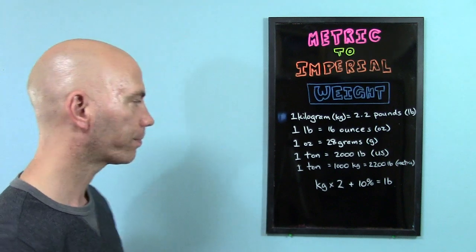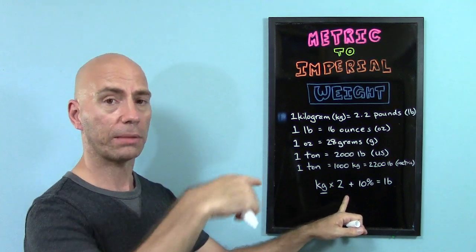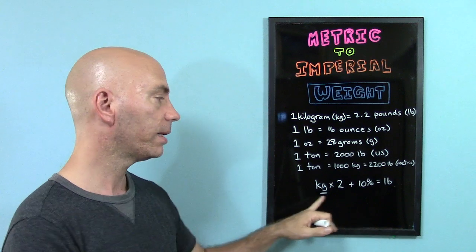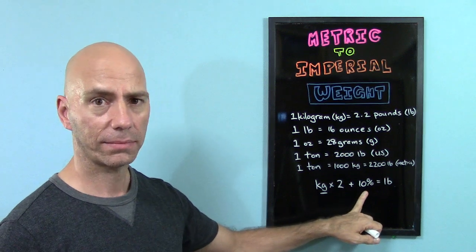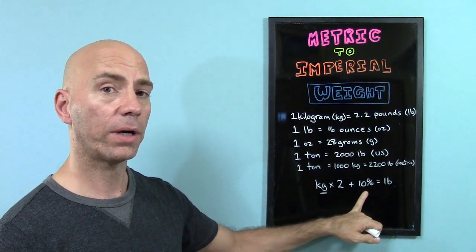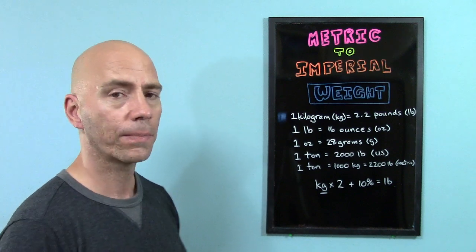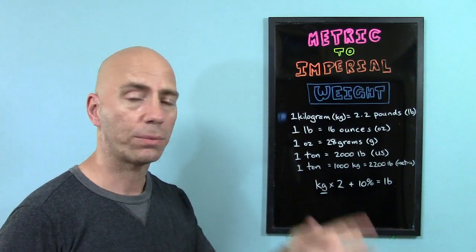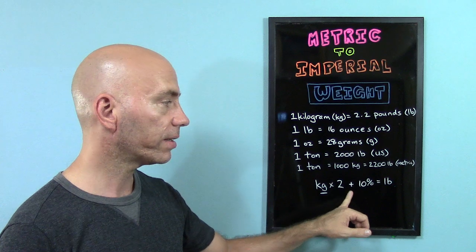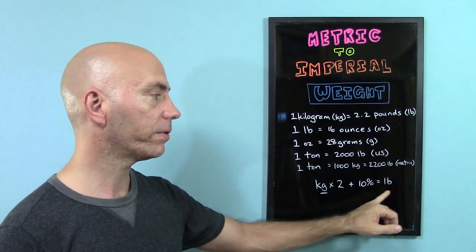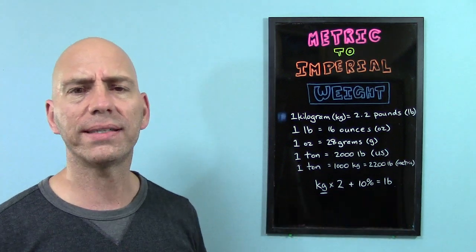So here's an easy trick for you. Remember that kilograms times 2, so in my question, 50 kilograms times 2, which is 100, and then add 10%. So 100, what's 10% of 100? That's easy. Just cut off the last zero, or the last digit, and you have 10. So 10% of 100 is 10. So 50 times 2 is 100, plus 10%, which is 10, equals 110 pounds. So that's easy. I asked you an easy question, 50 kilograms.